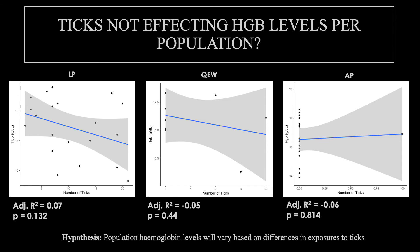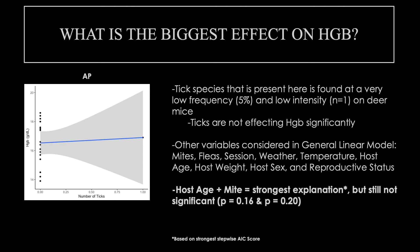When looking at sites individually, mice from Long Point were affected by ticks more than mice from either Queen Elizabeth's Wildlands or Algonquin. However, these results show that ticks were not significantly impacting any of the populations individually. In Algonquin, the focal species of ticks are not present, so it is not expected that ticks would play a significant role in determining hemoglobin levels. Based on a stepwise AIC, a model including the age of the mice and the presence of mites was determined to be the strongest explanation for what is affecting hemoglobin levels, though these results were also found to be non-significant.